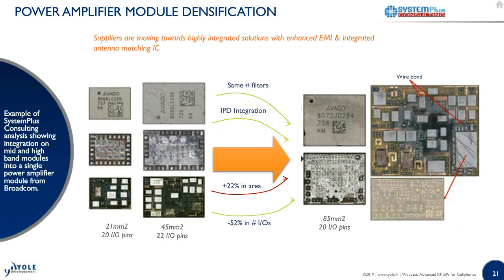On power amplifier module densification: suppliers are moving towards more highly integrated solutions with enhanced AMI and integrated antenna matching IC. The mid-end module is 21 mm² and the high-end is 45 mm². In the high-mid-end integrated module, area has increased to 85 mm², but the number of IOs has decreased and there is more integration with more filters and different kinds of interconnects.